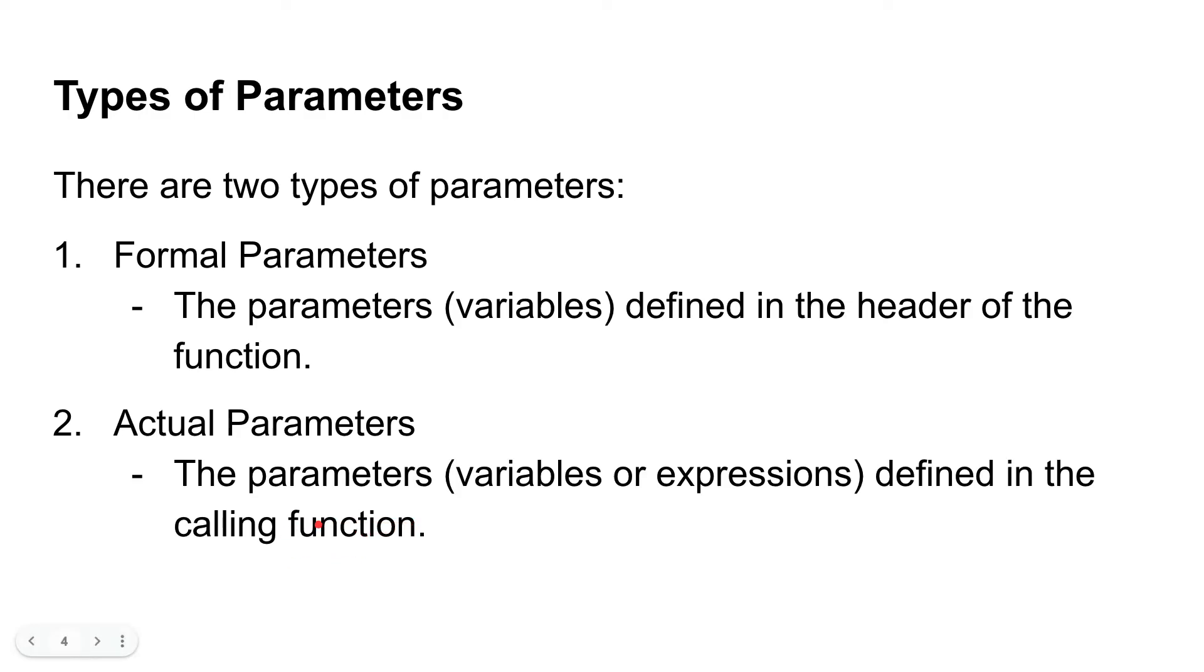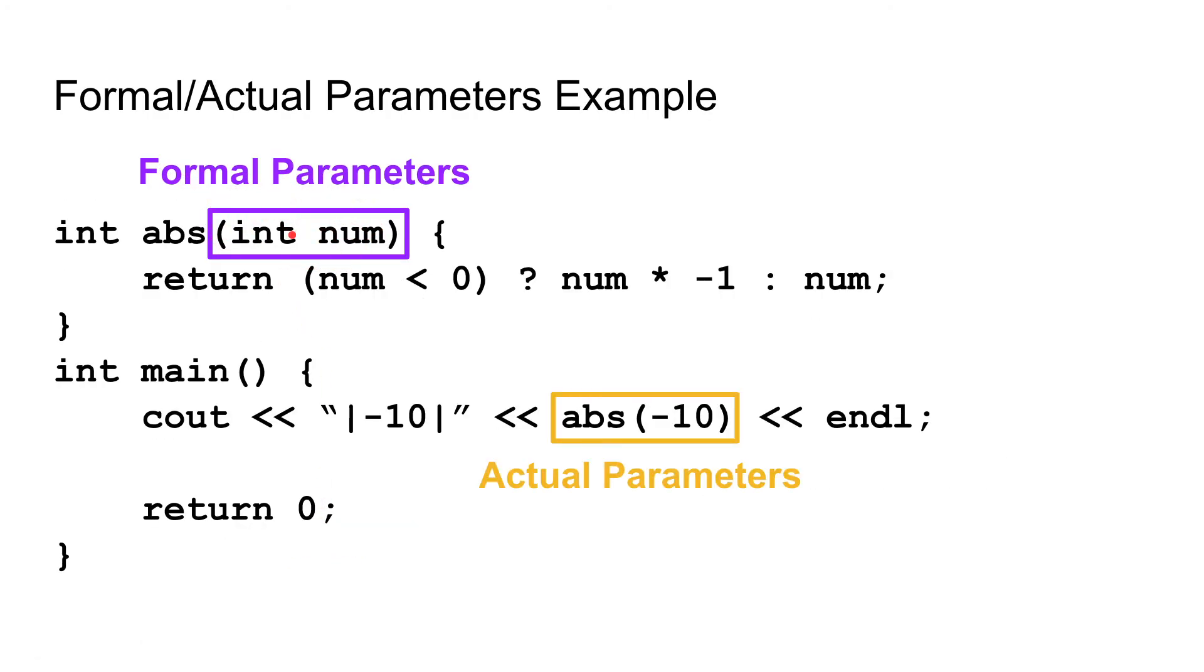And what does that mean? Well, the formal parameters are going to be the parameters that are up here in the header of the function, the ones that you are able to use by name here in your function. And the actual parameters are going to be the parameters that you are passing over here in the call to the function.